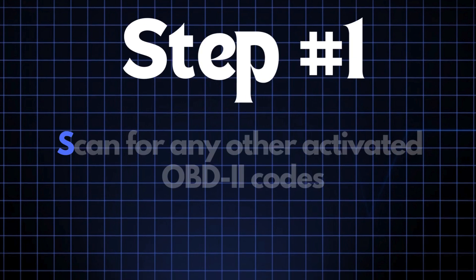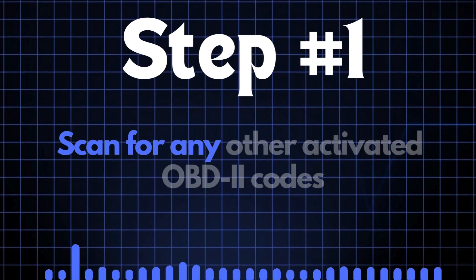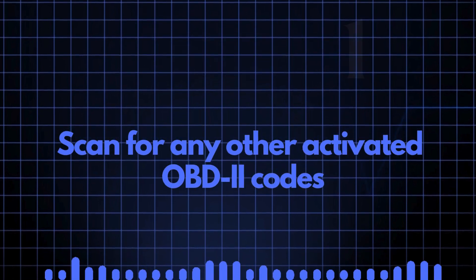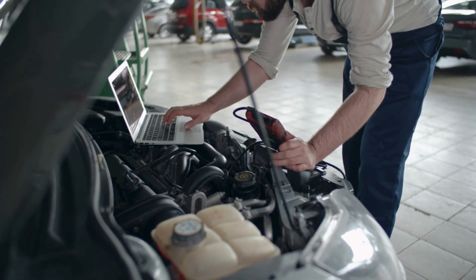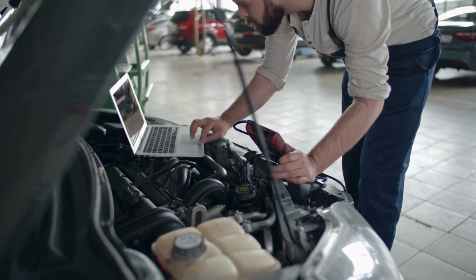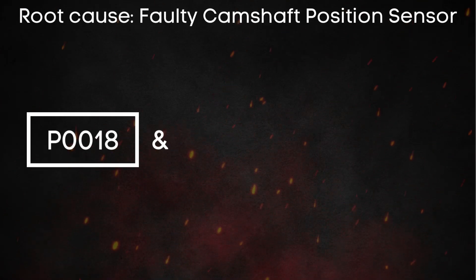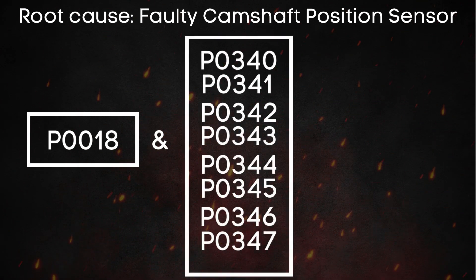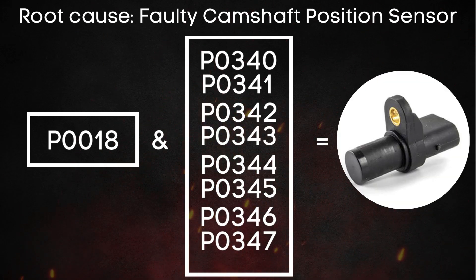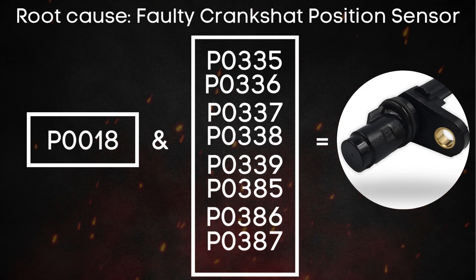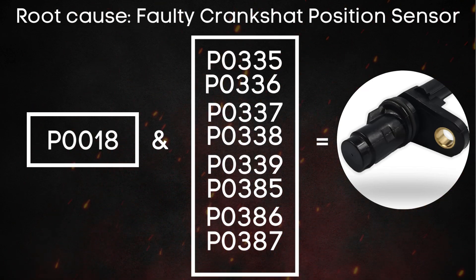The first step is to scan for any other activated OBD-2 codes. This helps us pinpoint where we need to focus. If there are other codes related to a faulty camshaft sensor, we should focus on the camshaft sensor. Similarly, if there are codes related to the crankshaft sensor, that's where our attention should go.